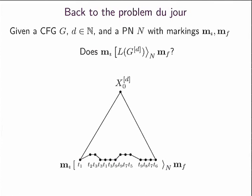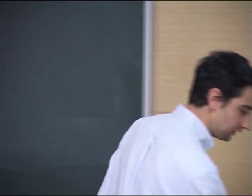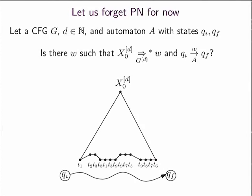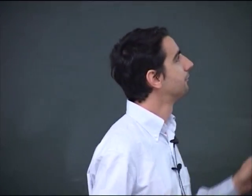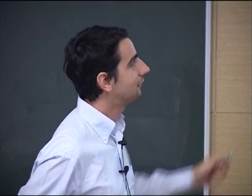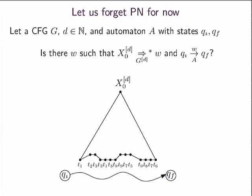Now you know what bounded-index approximations are. As input, we have a grammar, a value for the index we want to consider, and a Petri net. This is the problem we want to solve. Let's start with something much simpler — let's forget about Petri nets for now and just take a finite automaton. I replace the Petri net by a finite state automaton with an initial and a final state. The question is: is there a word derivable in the grammar that leads from the initial state to the final state? This is basically the language intersection problem for a regular language and a context-free grammar.